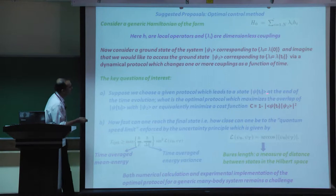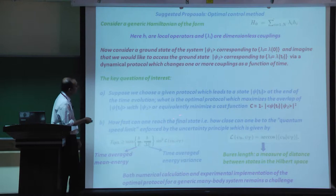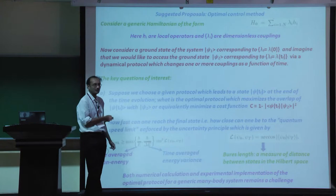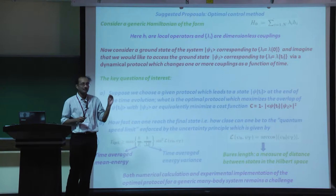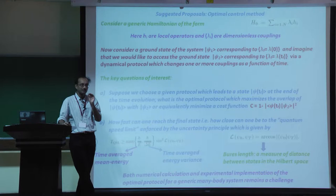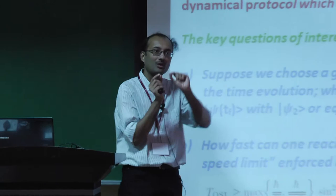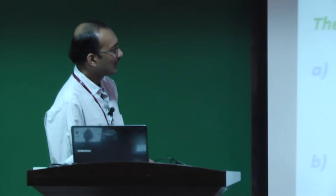One asks: what is the given protocol for which, going from psi(t_i) to psi(t_f) at the end of time evolution, we will have maximum overlap between the two ground states? They minimize a cost function given by 1 minus the wave function overlap squared. This is done by breaking the time-dependent protocol into discrete time steps with constant evolution within each step, then optimizing with respect to all those constant pieces.